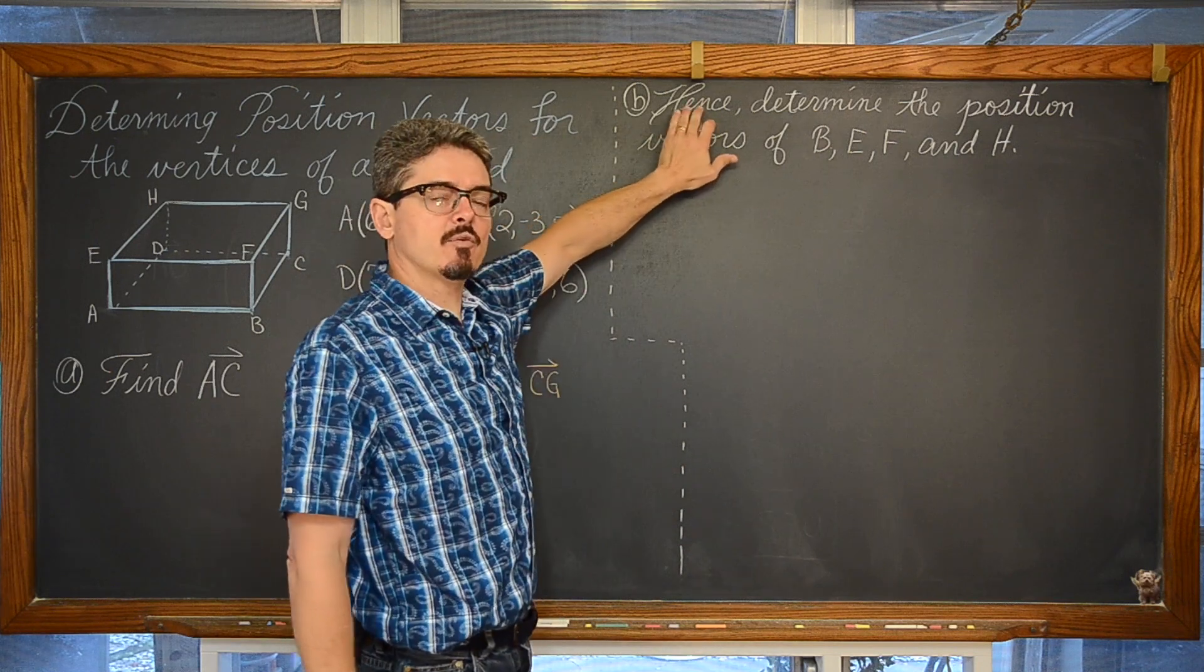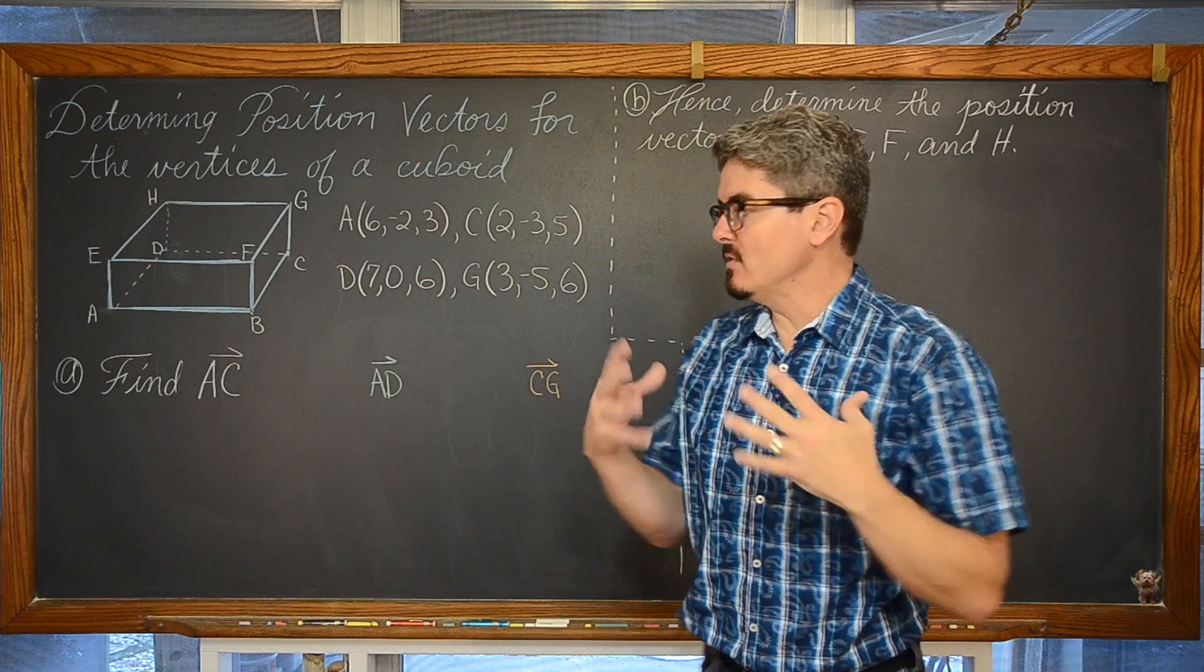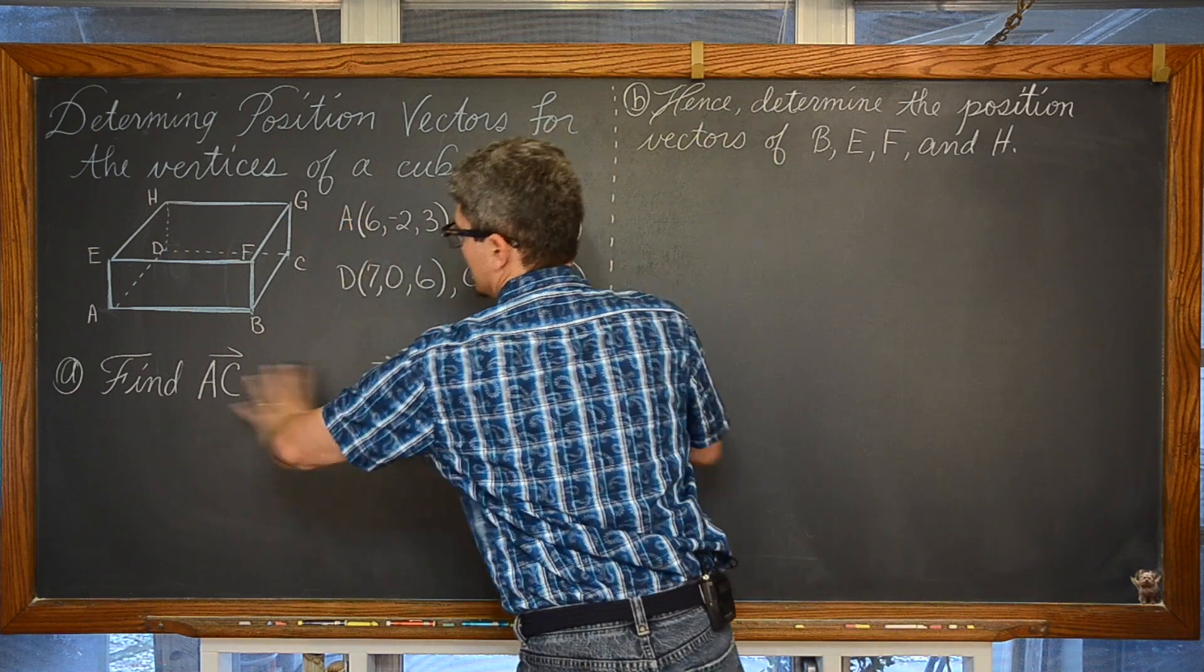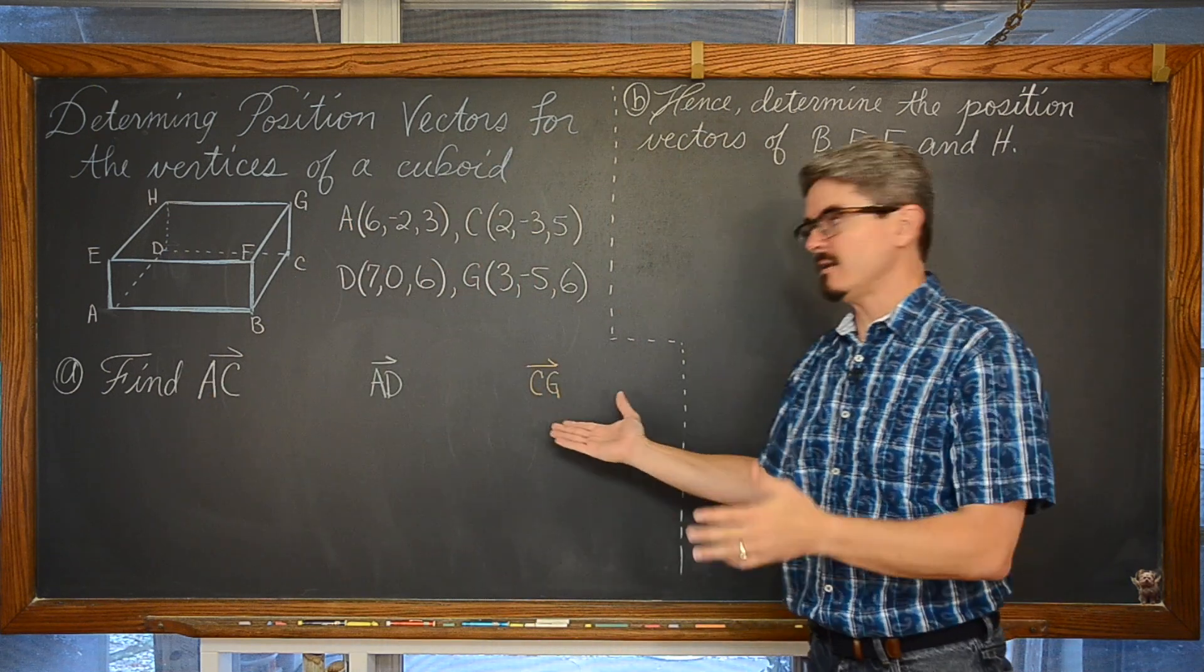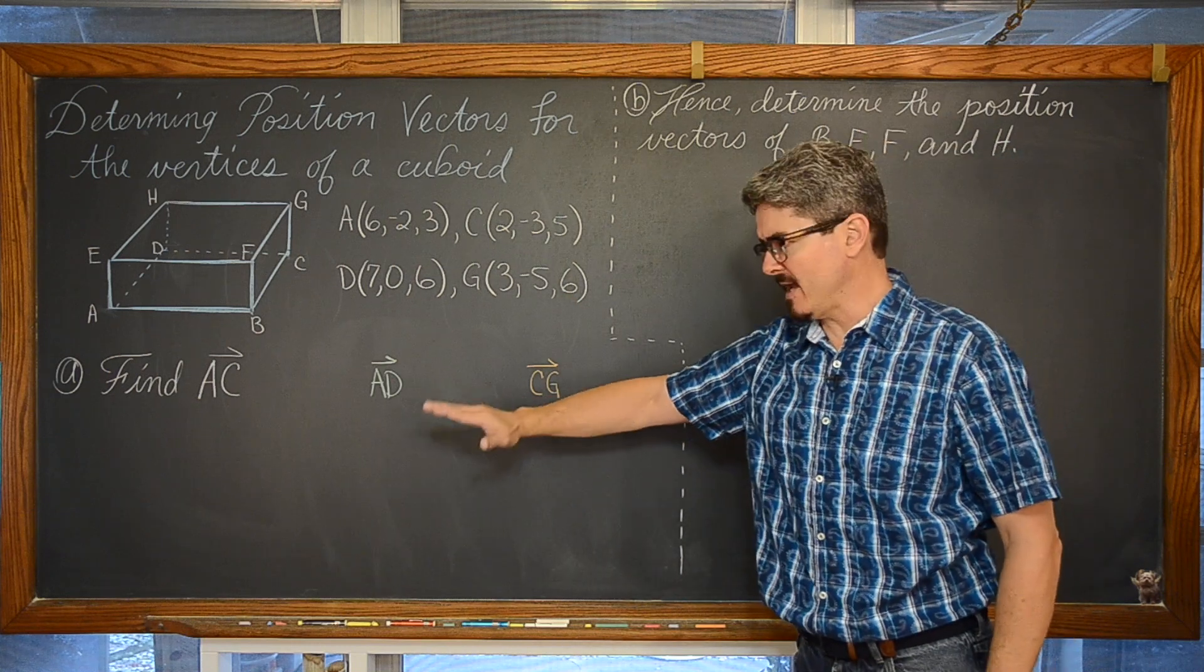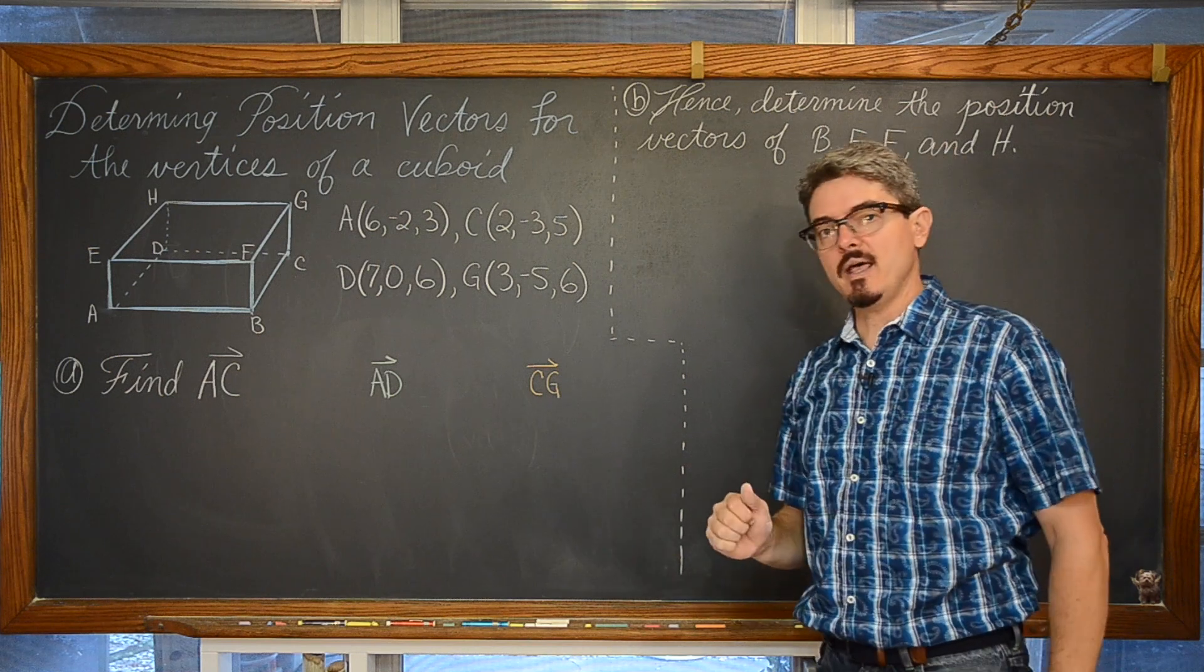Hence means that for part B, if you want full credit, you need to use the information that you were either given or that you found in a previous part of the question. So to answer part B, we are going to have to use the vectors that we found in part A.